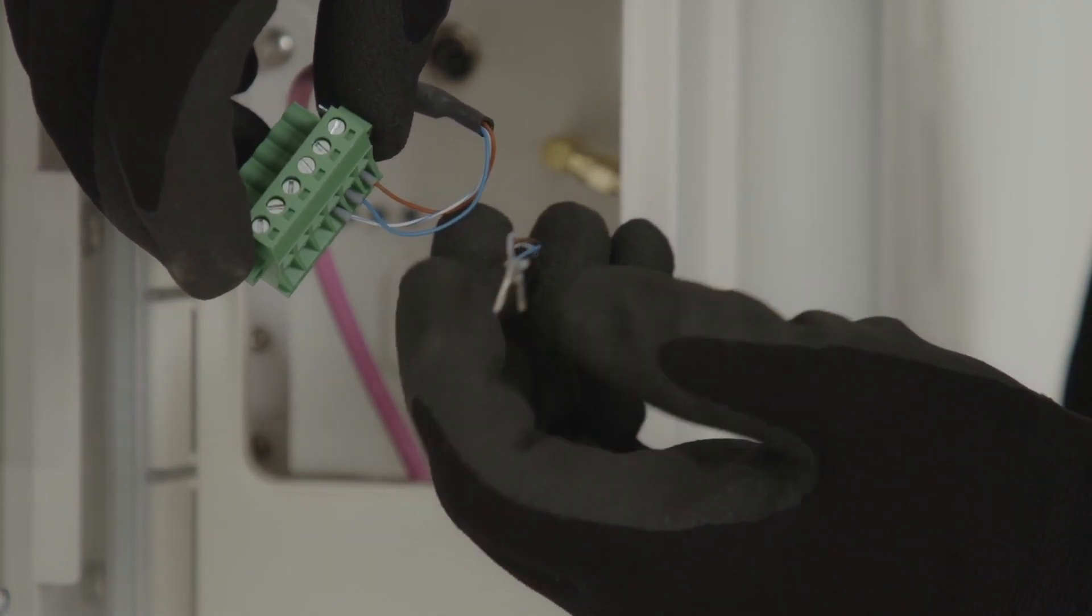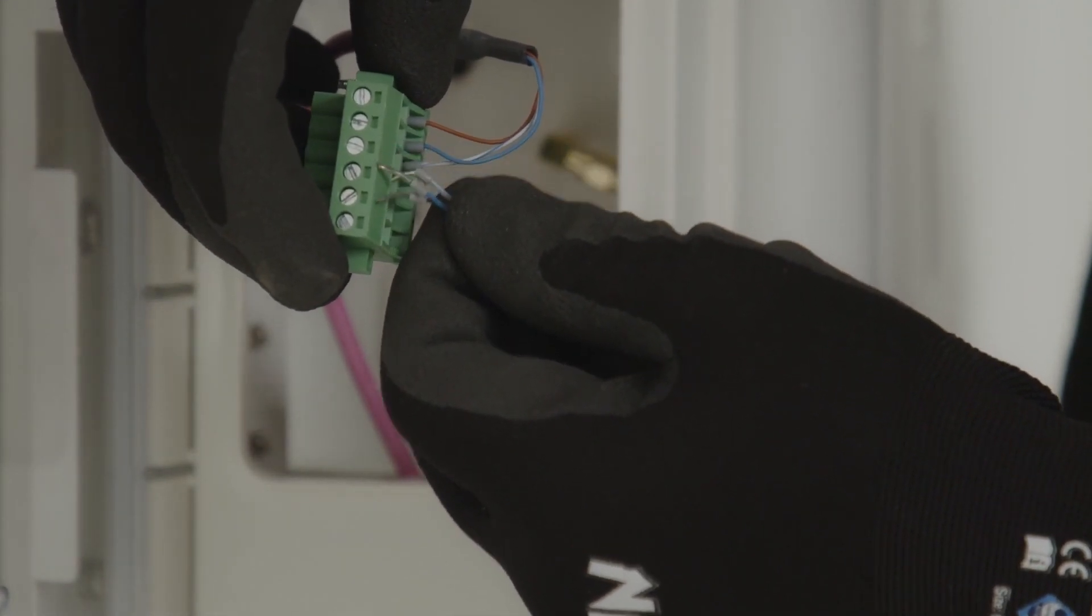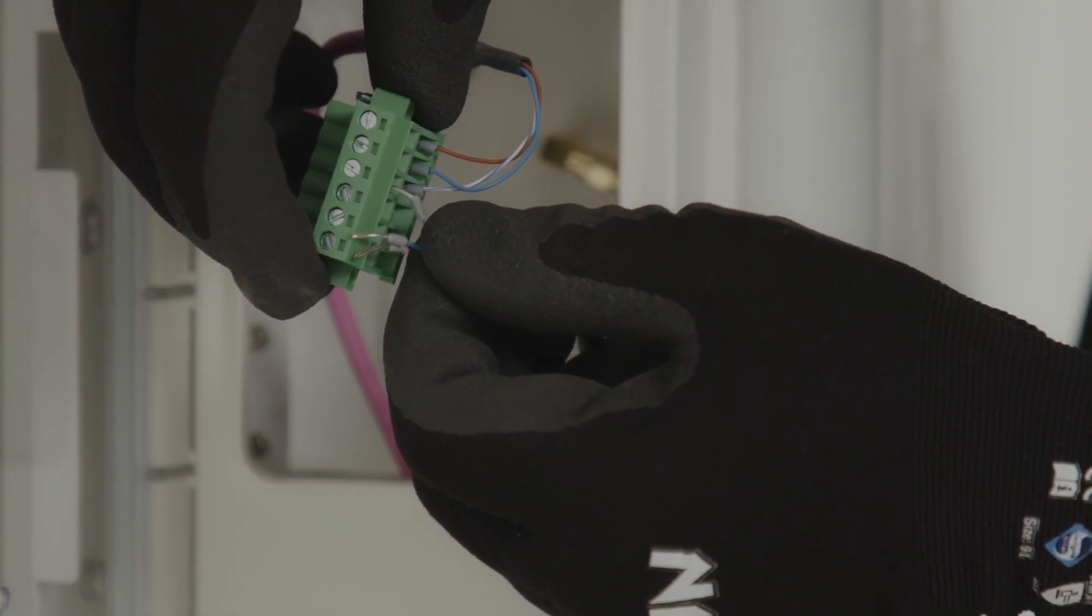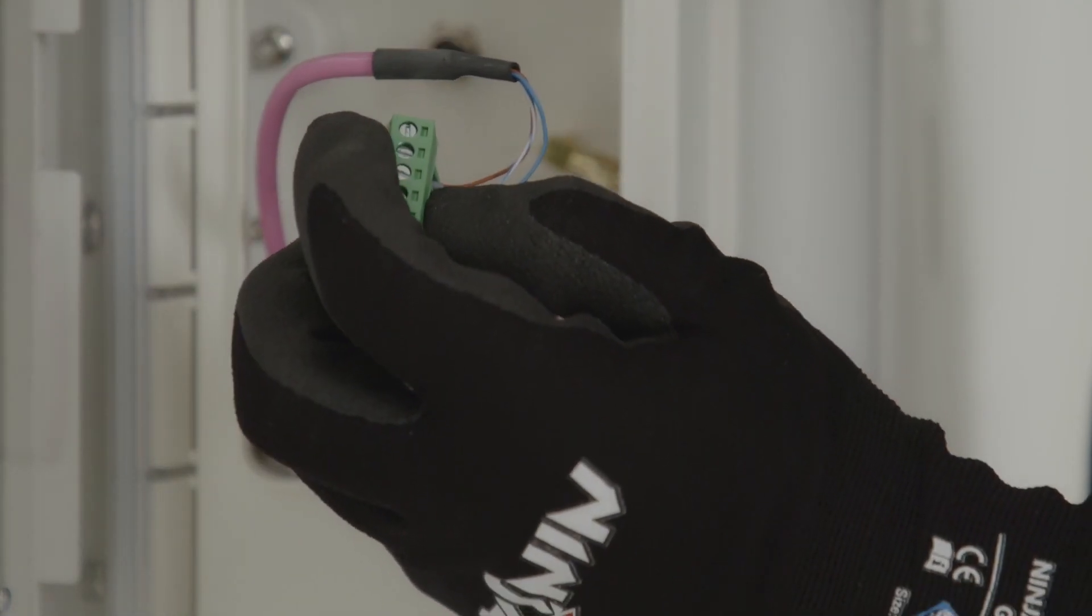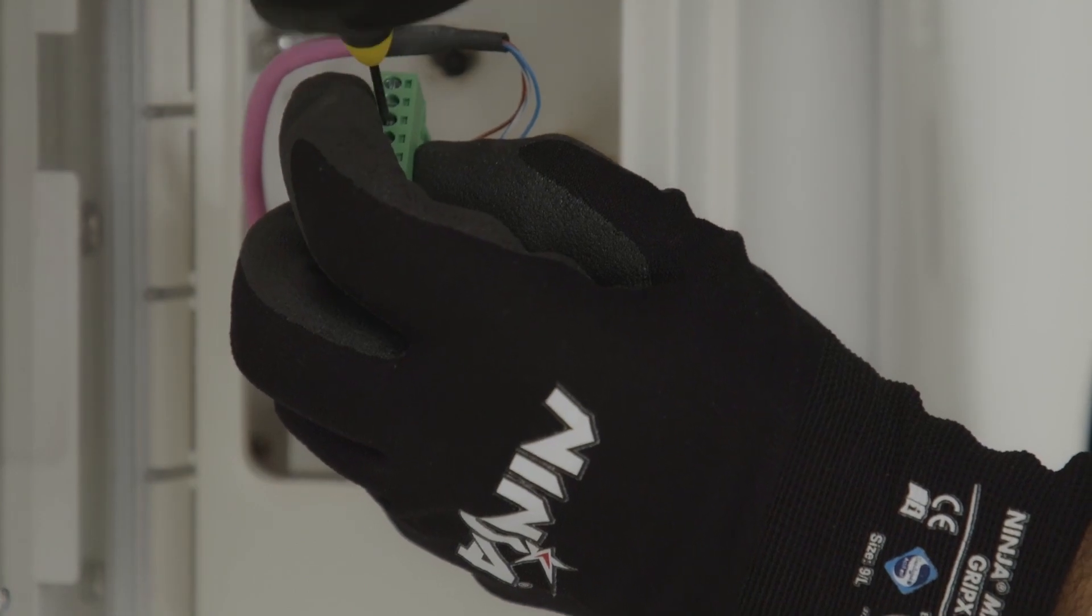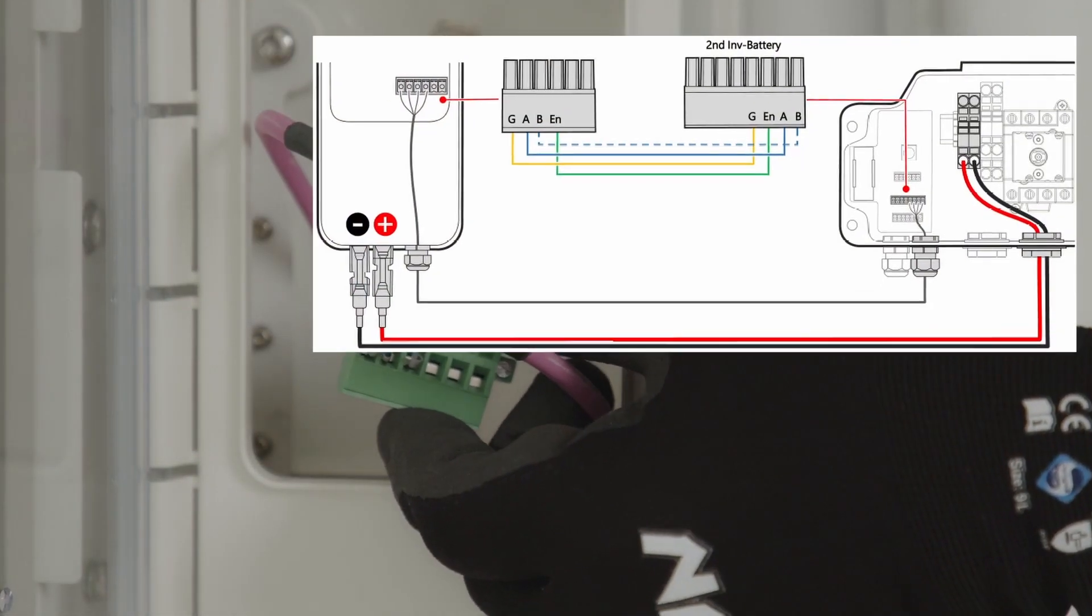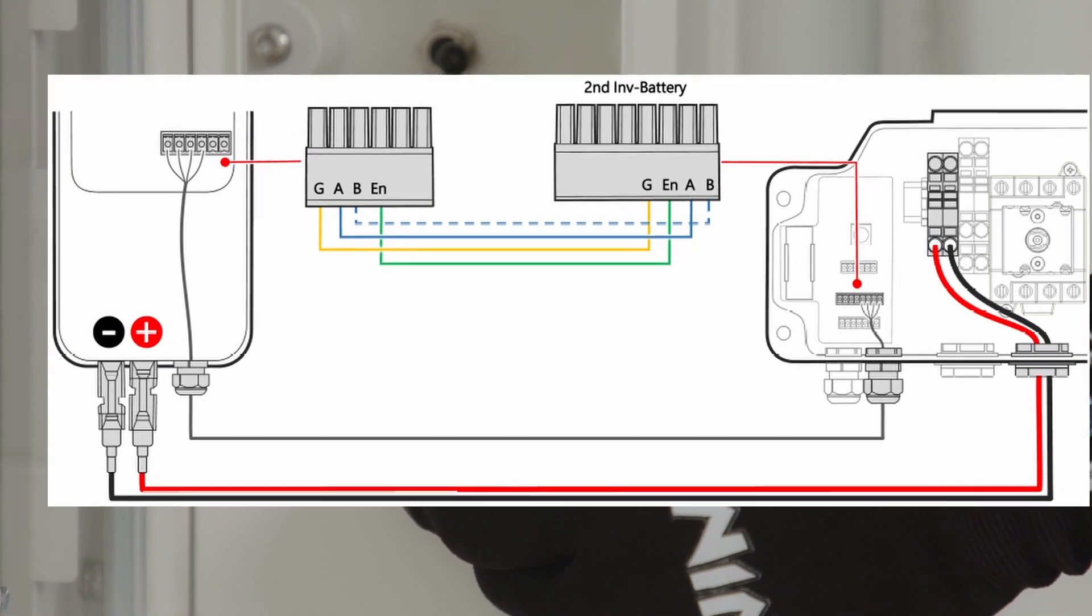If two SolarEdge batteries are being paralleled together, or three, the RS485 connection can be daisy-chained between each. As you'll see on the terminal block, there is an in and out connection for the RS485, so simply wire the adjacent SolarEdge home battery to the spare port on the terminal block.